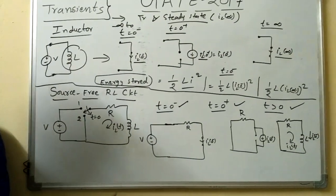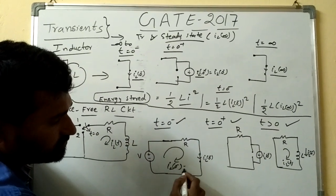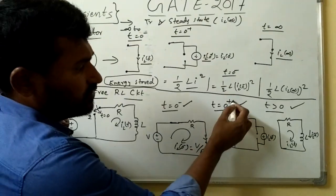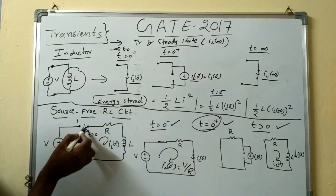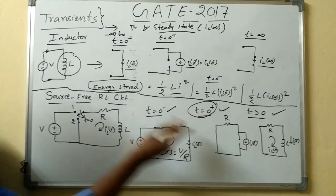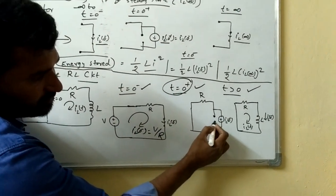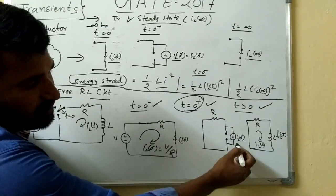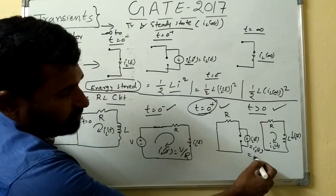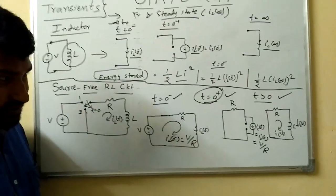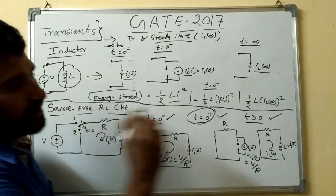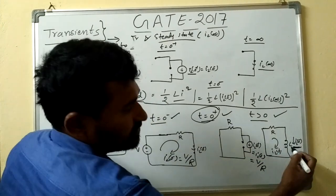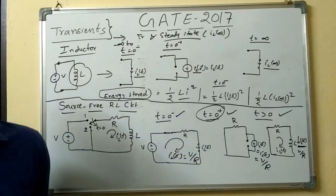With the inductor behaving as a short circuit and the switch in position one, we have only resistor R in the loop. So I_L(0⁻) = V/R. Now we know I_L(0⁻). Next, at t = 0⁺ the switch suddenly moves to the second position — the source is removed. The inductor opposes the sudden change and behaves like an open circuit, but the current remains at the previous value. So I_L(0⁺) = I_L(0⁻) = V/R. For t > 0, the inductor is in the circuit with its initial current I_L(0⁻) = V/R.